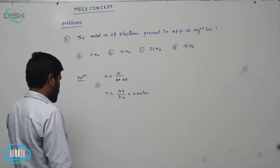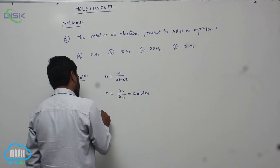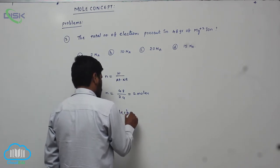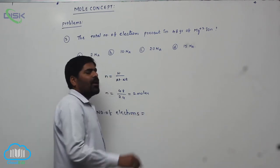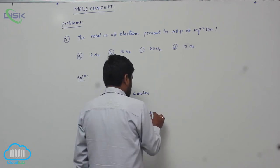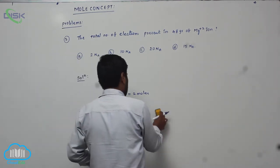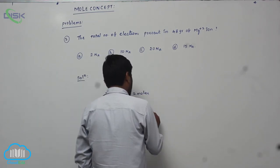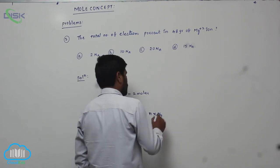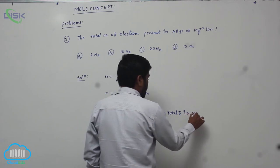That gives us 2 moles. Now, the number of electrons equals number of moles into Avogadro number into the total electrons in Magnesium plus 2 Ion. So here we have 2 moles.